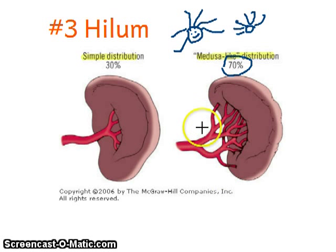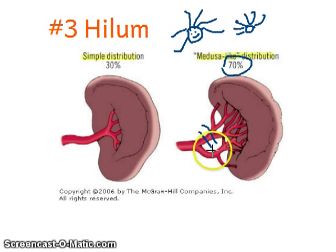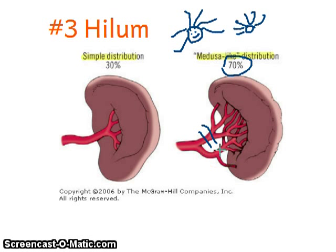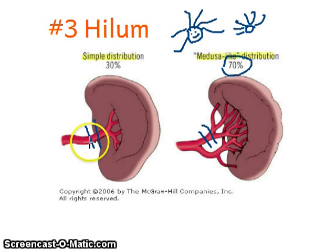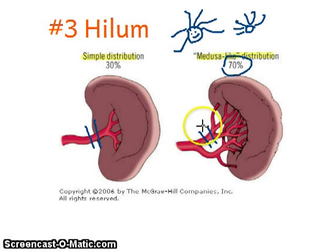So if you only ligate one vessel you may be missing another splenic branch from the splenic artery, and you should be careful while ligating. With the simple distribution, it's easy to just ligate the main trunk close enough to the spleen.